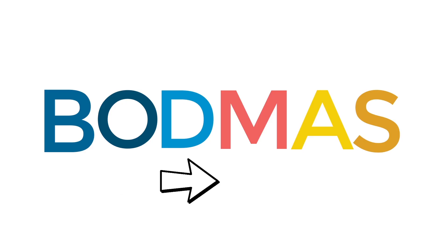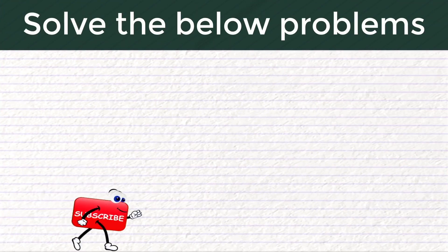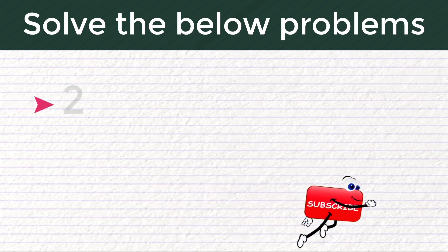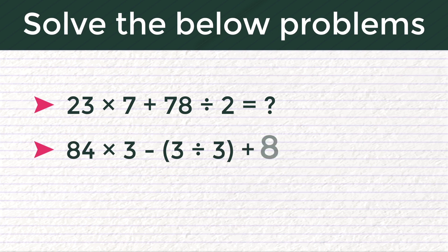If you understand the BODMAS concept, try solving the below problems and comment the answers. Number 1: 23 × 7 + 78 ÷ 2. Problem 2: 84 × 3 - (3 ÷ 3) + 8 × 56 ÷ 7.